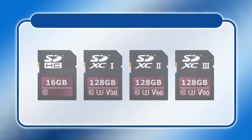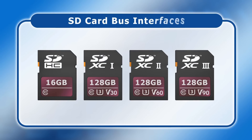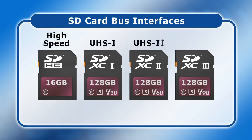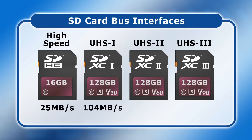Today SD cards and devices are available with several different bus interface standards. These relate to the speed of electronics used to transfer data and are an interface hardware specification quite distinct from an SD card's speed class. At least in theory, right now there are four different SD card bus interface standards known as High Speed, UHS-1, UHS-2 and UHS-3, offering potential maximum data transfer speeds of up to 25, 104, 312 and 624 MB per second.